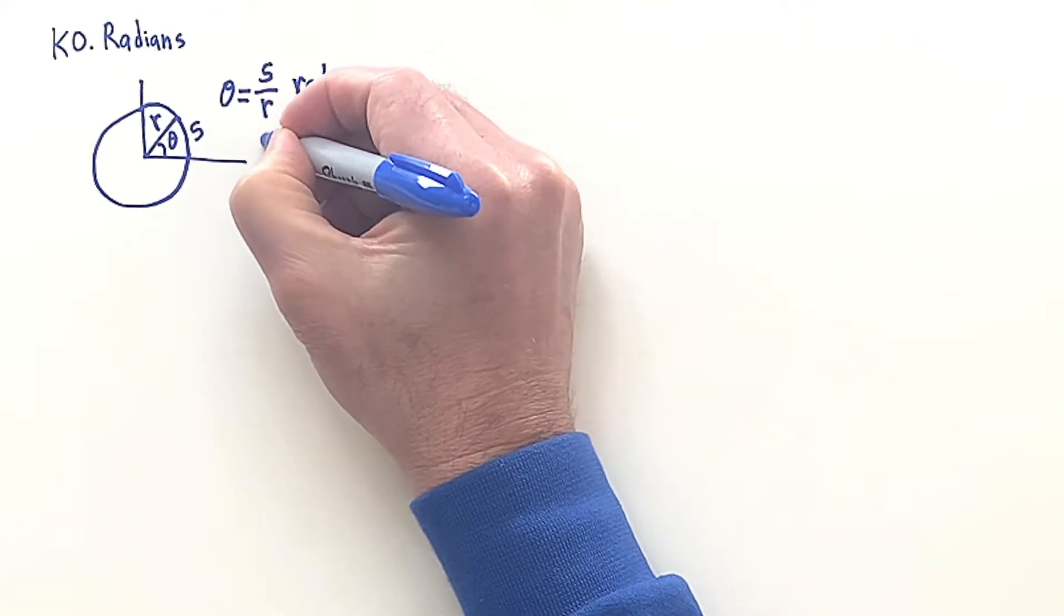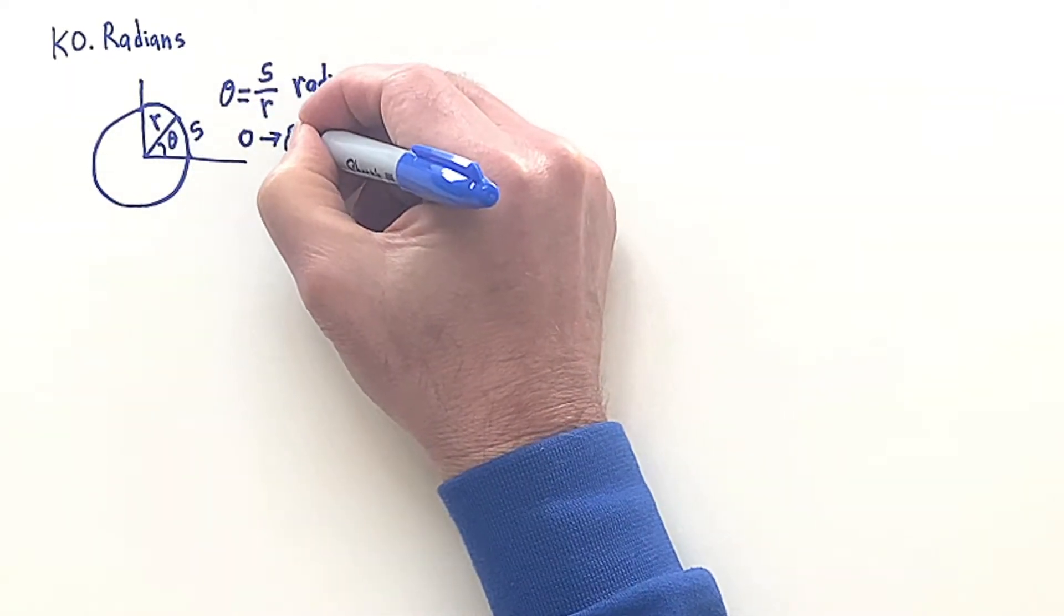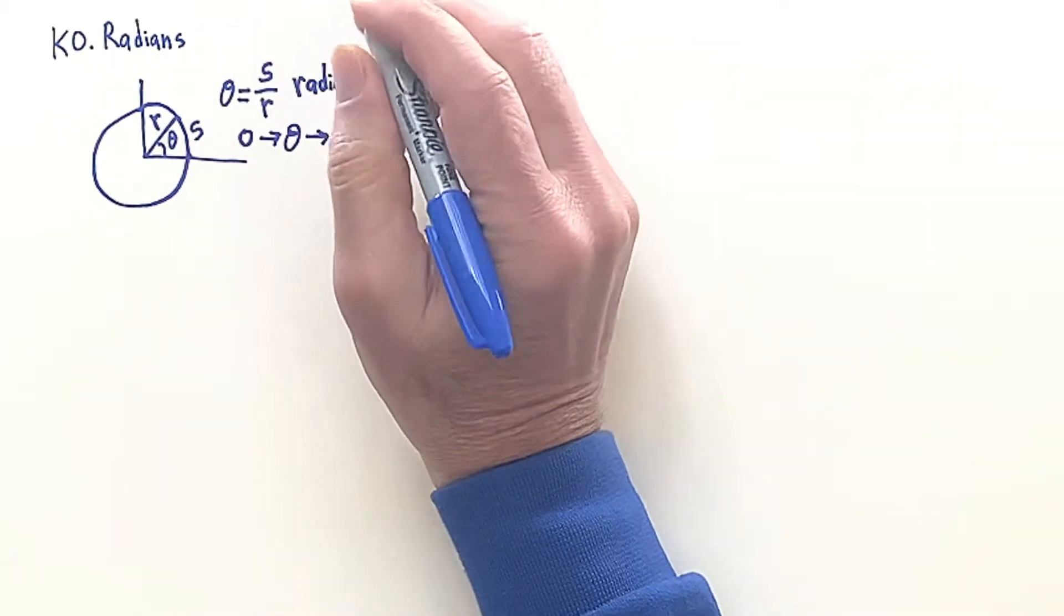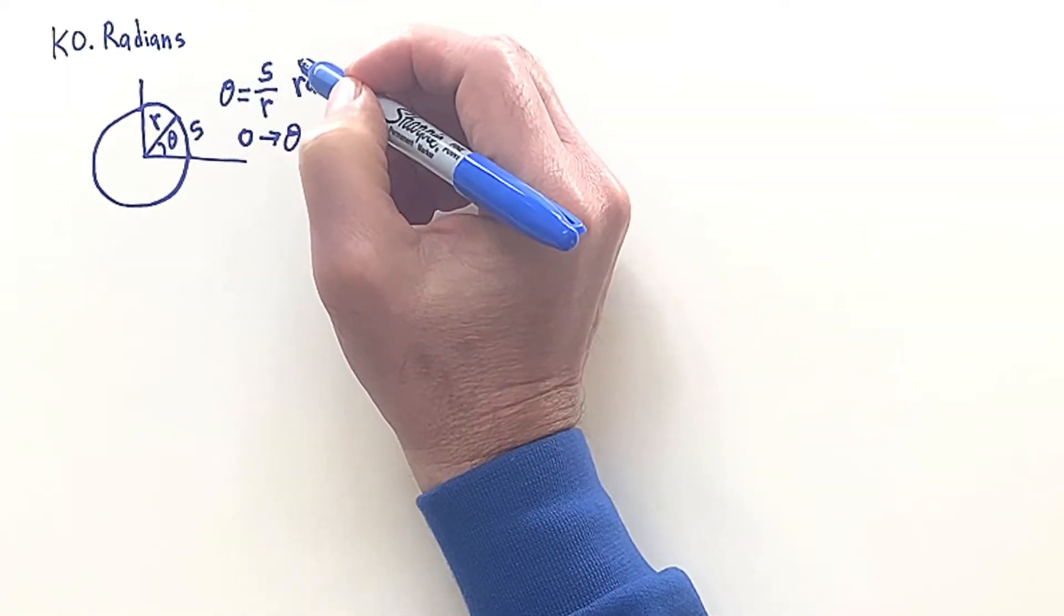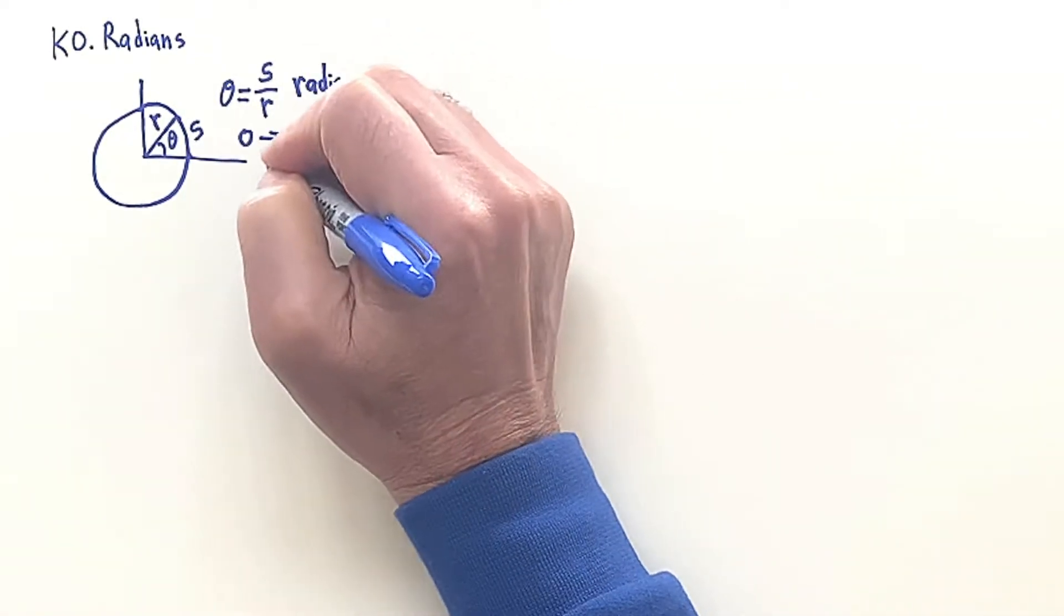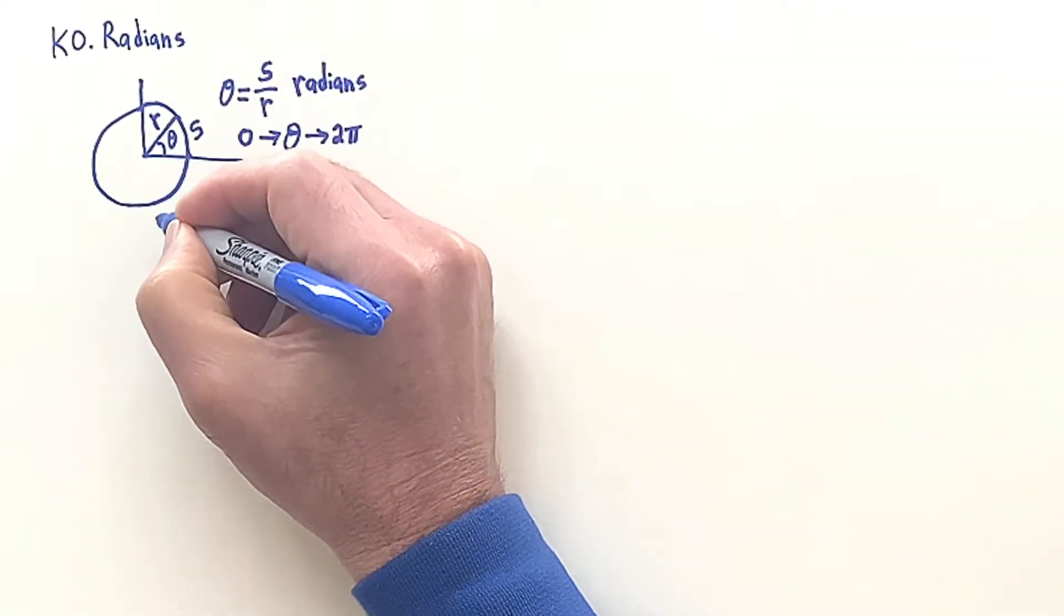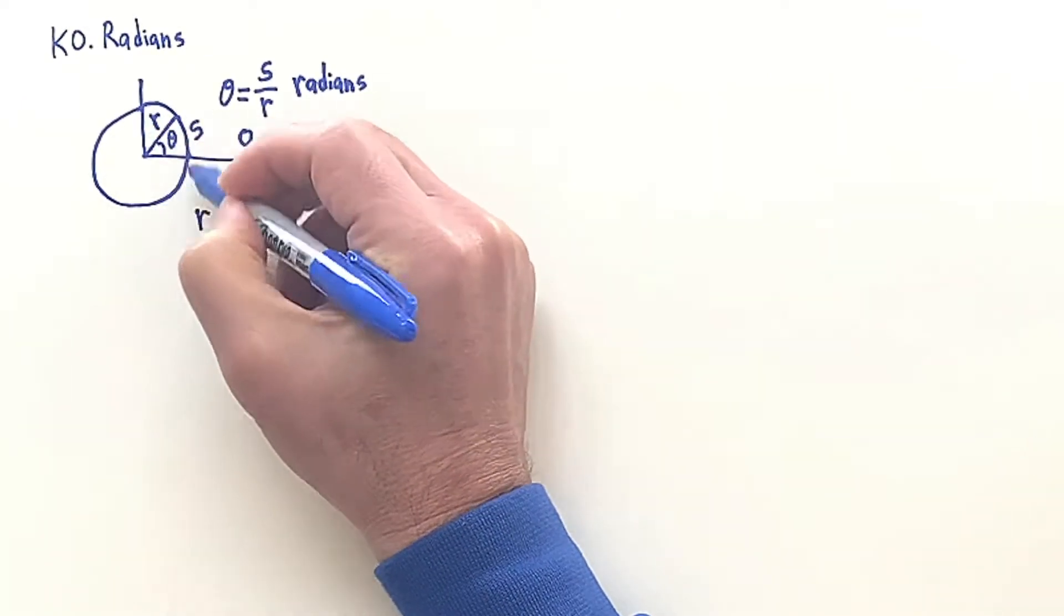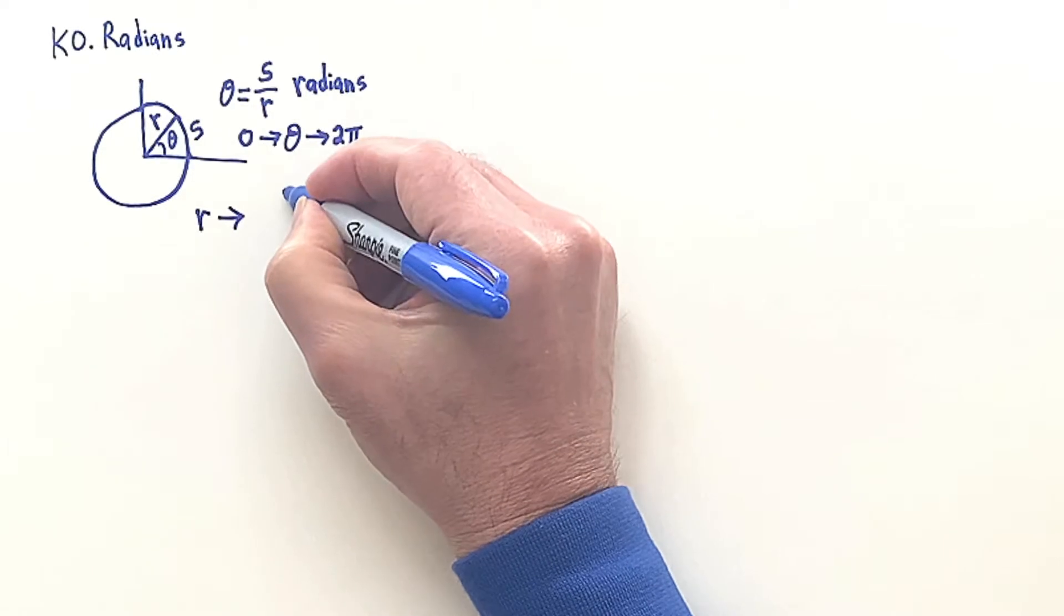Now the angle here can go from zero to two pi to get yourself one circle, and it can continue to four pi, six pi, and whatever. The reason why this angle goes from zero to two pi, you can see that as a derivation. We know first that R is correlated to the circumference.